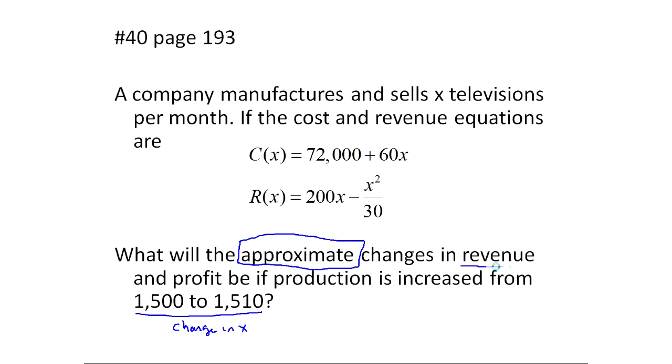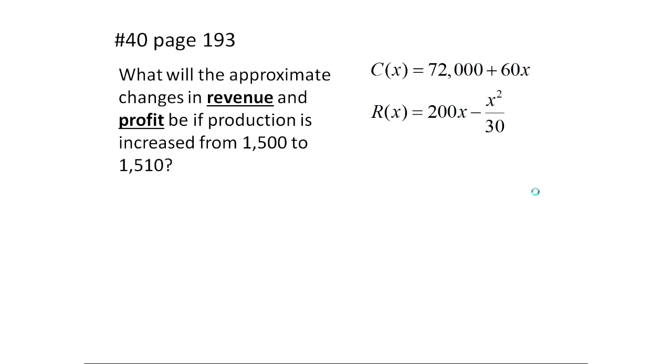Change in revenue - that'd be dR. We're given a revenue function and profit - that would be dP, but we're not given a profit function. We'll figure that out in a minute. The way I recognize this is that we're finding approximate changes. So we're given a change in x, which clearly is 10. We went from 1,500 to 1,510. We're given a change in x and we're asked for a change in some kind of function of x. That's like a dy. So let's look at this and apply our formulas. I have the same information here, just condensed down a little bit.